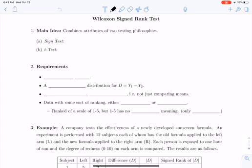Today we're going to talk about one last nonparametric test, also for paired data, but a little bit more powerful, called the Wilcoxon Signed Rank Test. And it combines attributes of two testing philosophies. The sign test is evaluating the signs of the differences, and the t-test evaluates the magnitude of the differences.